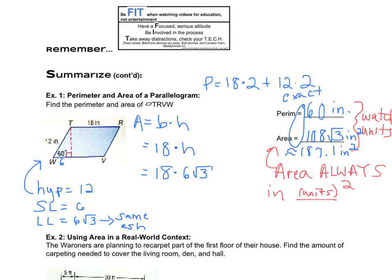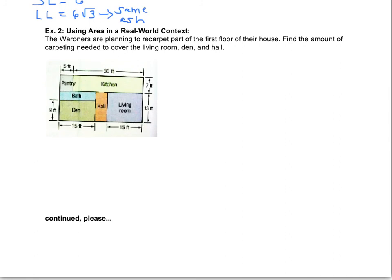For the next example using parallelograms, this is kind of putting it in the context of a real world. We've got a floor plan of the Warners' house and they are planning to re-carpet part of the first floor. What we need to do is figure out how much carpeting is going to cover the living room, the den, and the hall. I'm going to break up my problem into those three sections: the living room, the den, and the hall. Of course we know we're going to add up all three of those calculations to get our total. If we have area equals base times height for the living room, my living room here is just a rectangle that has a base of 15 and a height of 13, so that's just a quick multiplication, 195 feet squared.